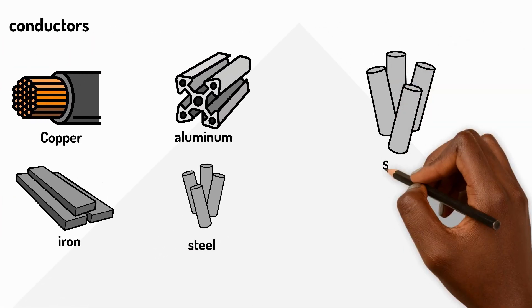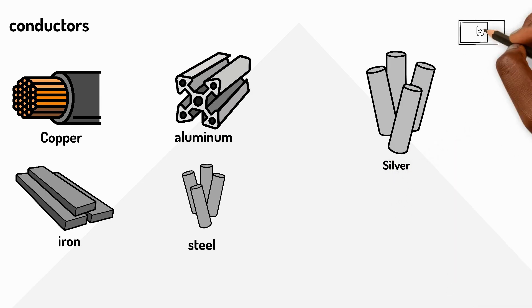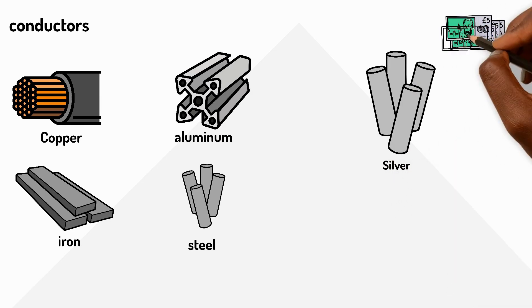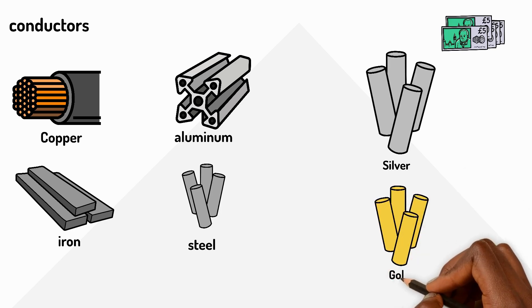The best metal conductor is actually silver, but it's expensive so we usually use copper instead. Gold is also an excellent conductor. It's sometimes used in expensive electronics because it doesn't rust.